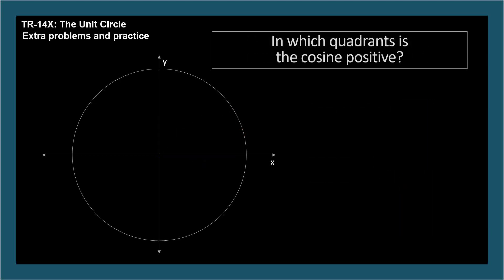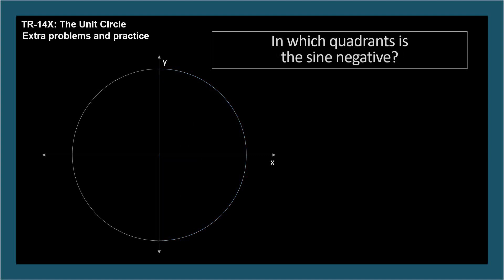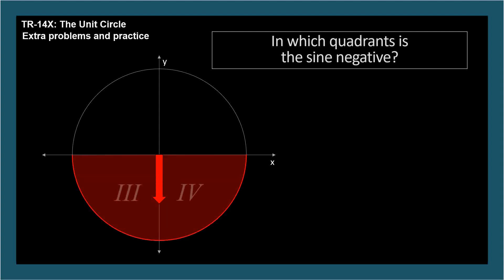In which quadrants is the cosine positive? Quadrants 1 and 4. Cosine is the x coordinate. In which quadrants is the sine negative? Quadrants 3 and 4. Sine is the y coordinate.